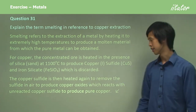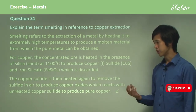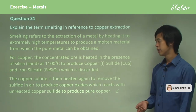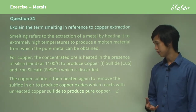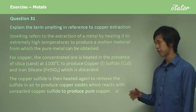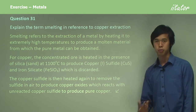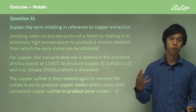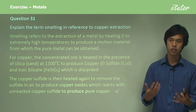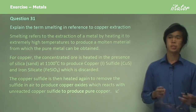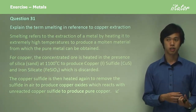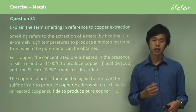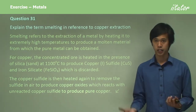The copper sulfide is then heated again to remove the sulfide. It is heated in air to produce copper oxides, which react with the unreacted copper sulfide to produce pure copper. So the copper sulfide is heated in air, which has oxygen in it, to form copper oxide. The copper oxide then reacts with the remaining copper sulfide to produce pure copper and sulfur dioxide.